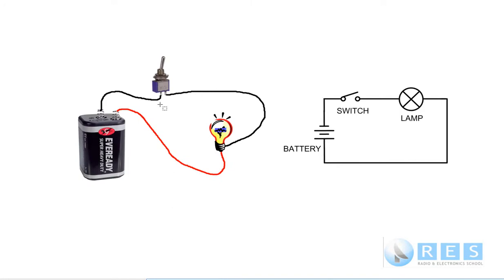This slide shows the schematic diagram of the pictorial diagram on the left. You can see how much neater and tighter it is to draw using schematic symbols instead of real pictures. This is a symbol for a battery. You would not expect the words battery, switch or lamp to appear — you would only see this circuit without any labeling.